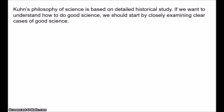If we want to understand how to do good science, surely the first thing we should do is examine actual examples of good science, like Einstein's development of general relativity or Darwin's development of natural selection. If we want to understand how it is that science works so well and the methods that have allowed science to become so successful, we need to look at scientific history.